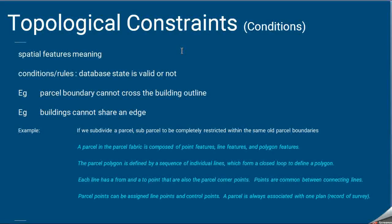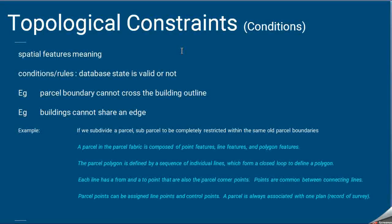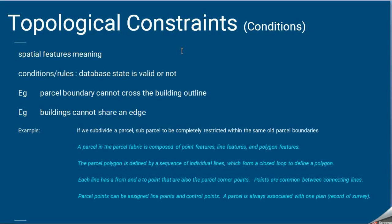Topological constraints: for example, when storing buildings, we have the concept of a parcel — lines and polygons stored in a structured way. Rules include that a parcel boundary cannot cross the building outline, and two buildings can share an edge. These kinds of rules, constraints, and restrictions must be followed when storing spatial data.